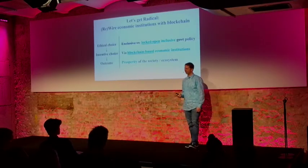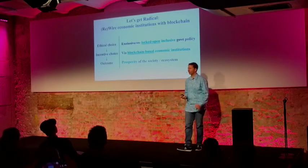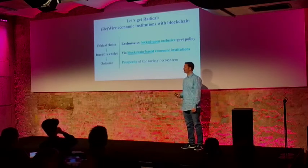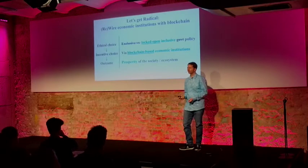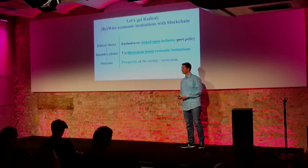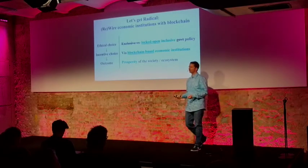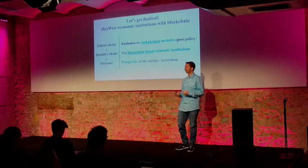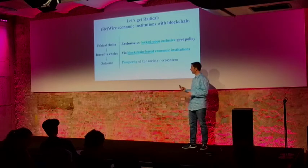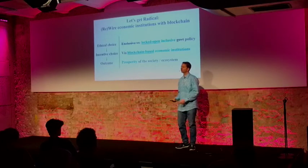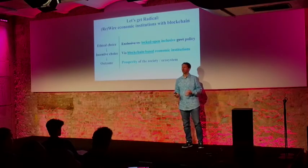The traditional way of thinking about this was hoping it lays at the level of government. But we have a new tool — a pretty powerful tool, not the only hammer, but a pretty new powerful hammer — and that is blockchain technology. Blockchain allows us to start with an ethical choice amongst ourselves that is not only inclusive, but locked open inclusive. With that, we can create new sorts of economic institutions that manifest incentive machines — an incentive machine that has a locked open inclusive policy. This can lead to the prosperity of the society or ecosystem, whether a nation, a specific global ecosystem, or very local and regional. This is a new tool where we can basically get radical and rewire our economic institutions with blockchain.